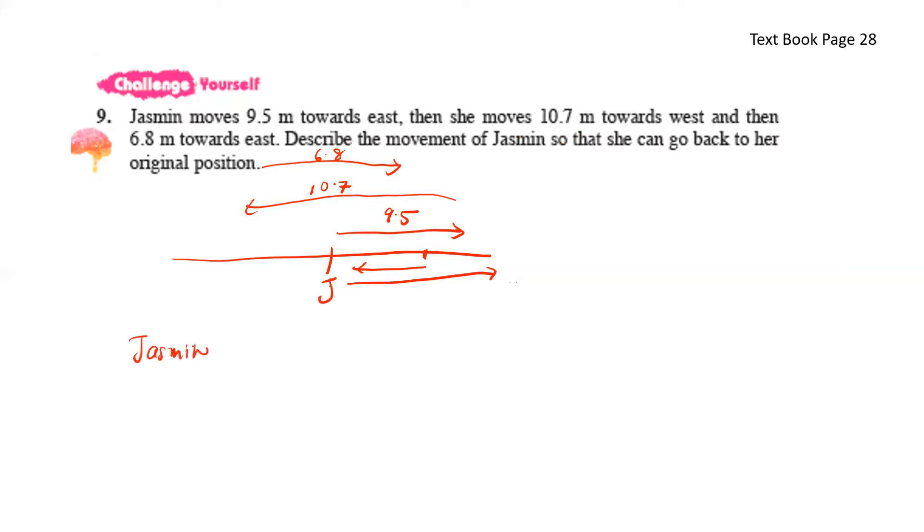Describe the movement of Jasmine so that she can go back to her original position. So now let's calculate where is Jasmine. Let's take 0 plus 9.5 because she moves to the right. Then minus 10.7 because she moves to the left. And then another 6.8. So this gives us 5.6 meters.